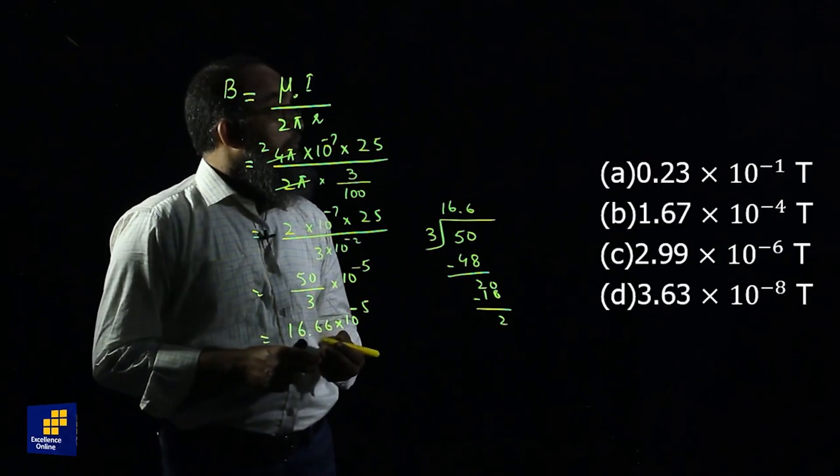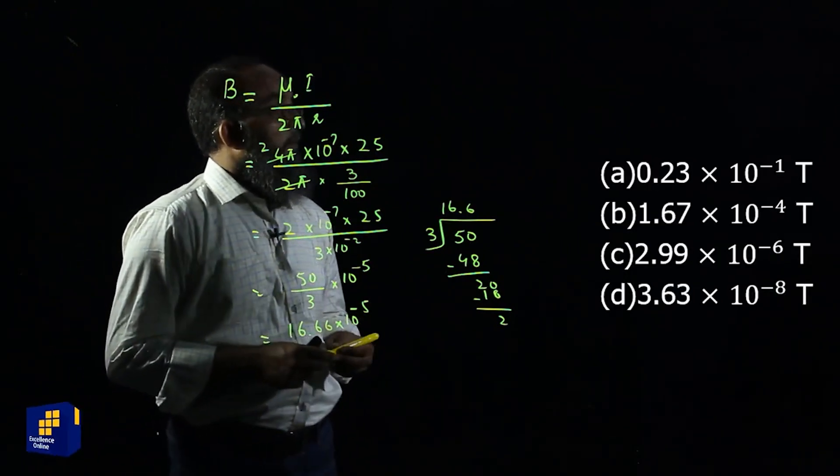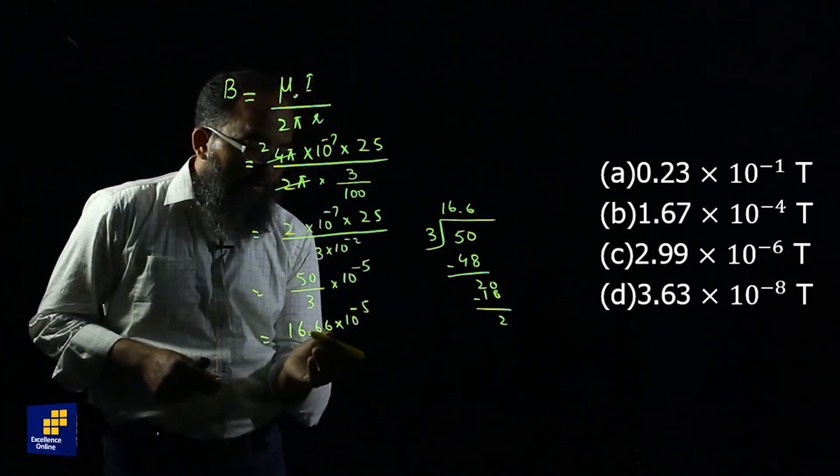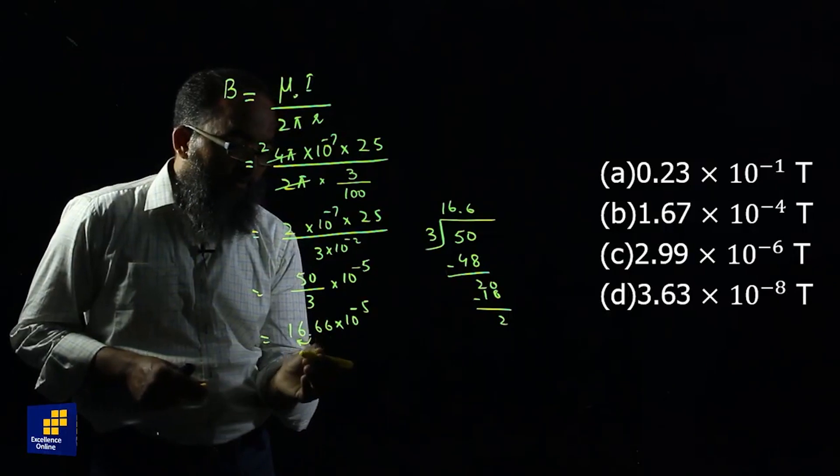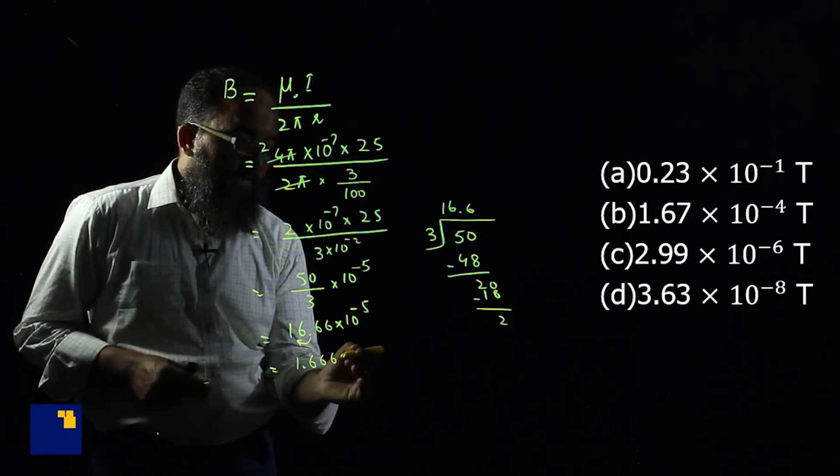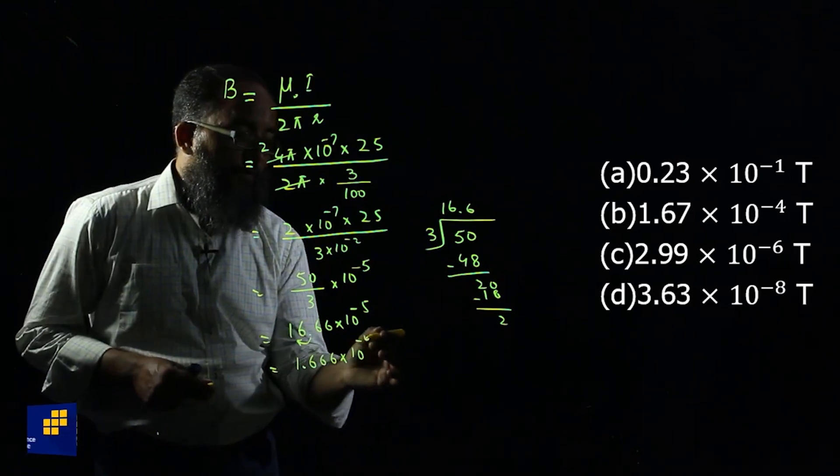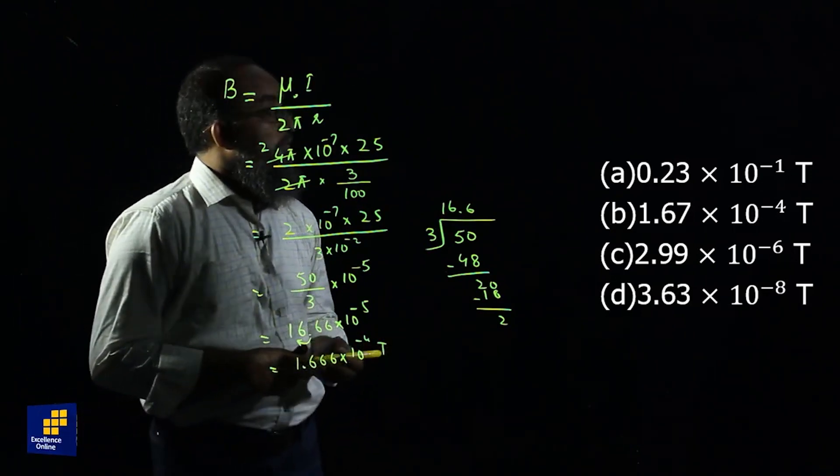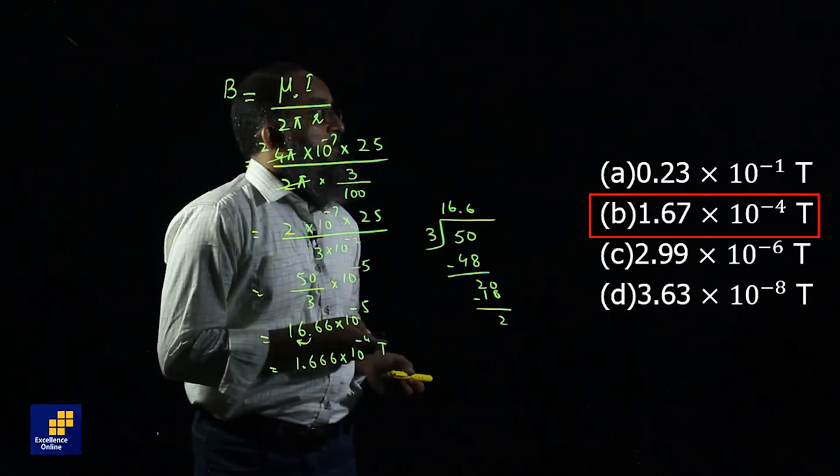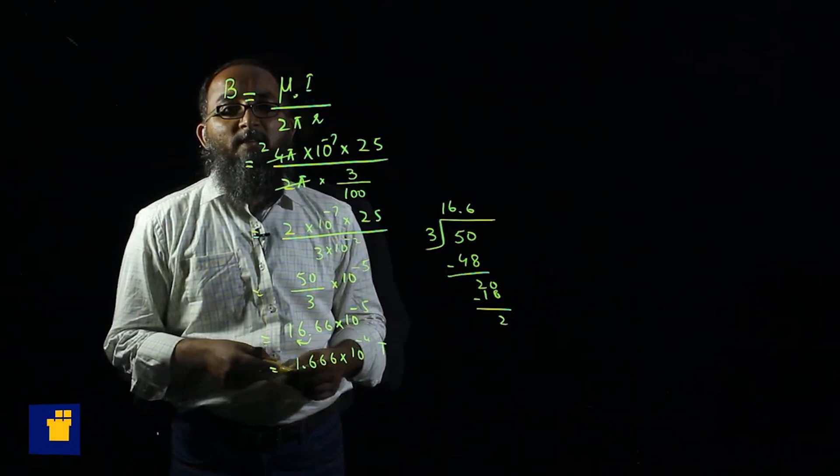If you see the options, all the answers are in scientific notation. That's why I move this point one step, one digit backward. We get 1.666 exponential minus 4 tesla. So the correct option is B, which is 1.67 times 10 power minus 4 tesla.